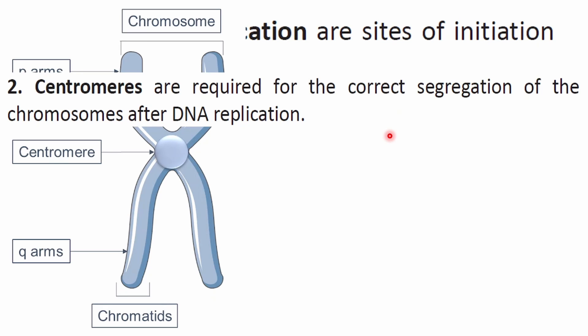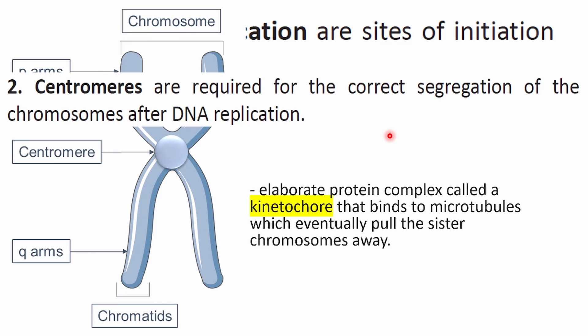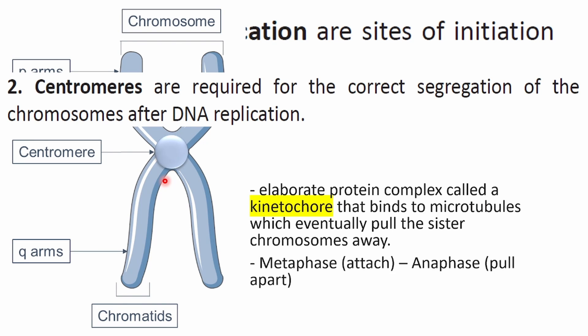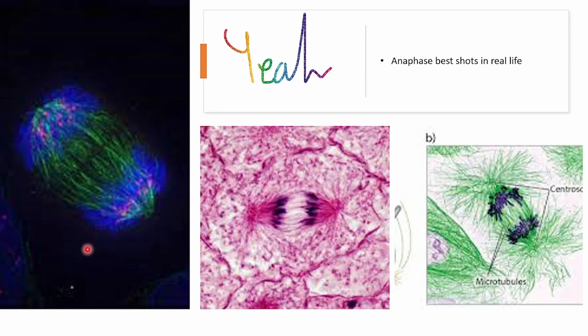Centromeres are required for the correct segregation of chromosomes. This is important for DNA replication — it's responsible for pulling the two sister chromatids apart. So this is very important as a congestion point, making it easy to pull the unit apart. Apparently the centromere can split, which is even more crazy. This is pretty much through anaphase — well, metaphase is where it's more visible, and you can see it in anaphase being pulled apart into two different things. Size varies and there's no way of determining that. This is what it looks like in real life, especially inside of a cell — super cool.